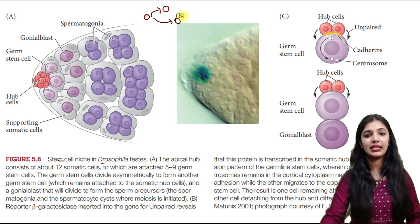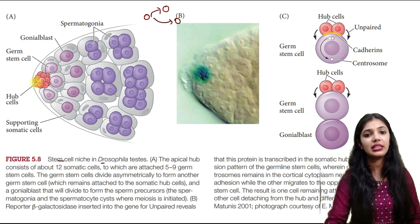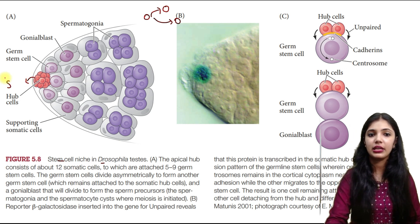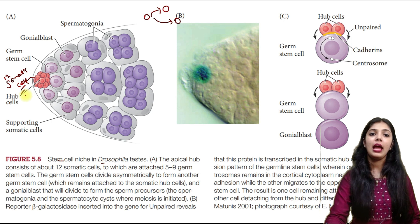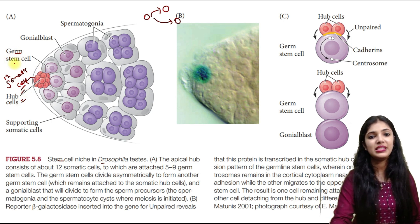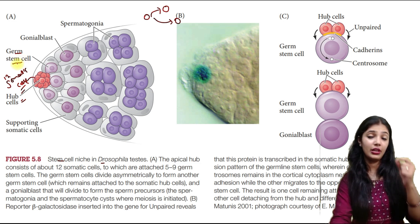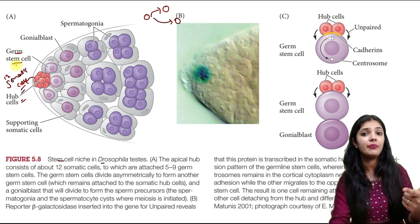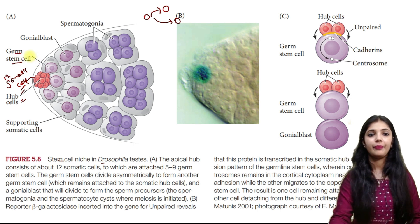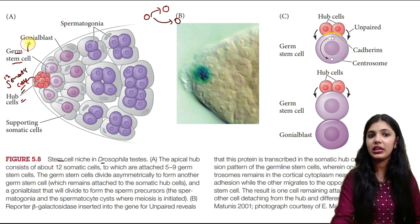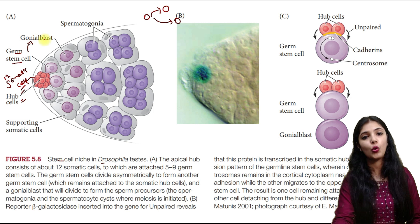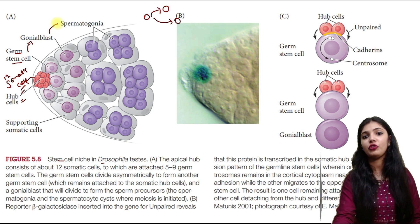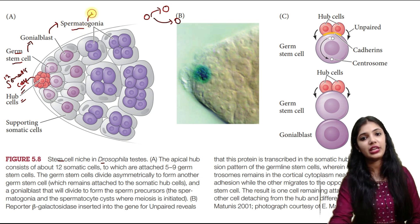Here the micro-environment is provided by the hub cell — we can see the red color, this is the hub cell. This hub cell has near about 12 somatic cells present. In contact with the hub cell are our germ stem cells. Whenever we see the word stem cell, it means it has the property to regenerate itself as well as give a determined fate — after determination, it will give a cell which is committed. This germ cell, after further division, will give a precursor cell known as the gonial blast, which will give rise to sperm.